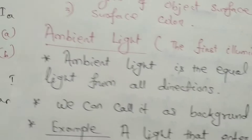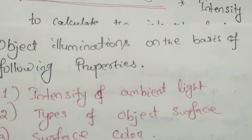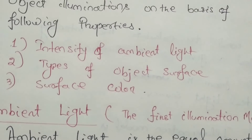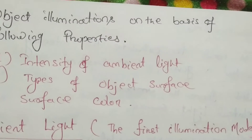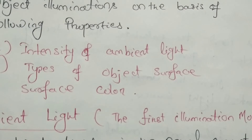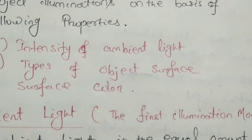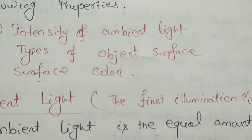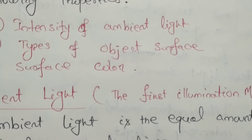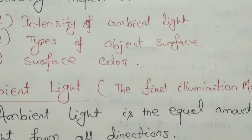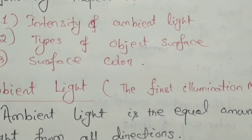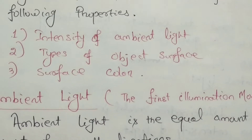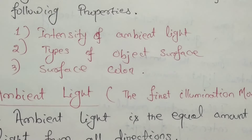Any illumination model is based on the following properties. First, intensity of ambient light. Second, types of object surface — the surface may be shiny, clay, or rough. Third, surface color — the surface color may be red, black, or whatever. On these properties the illumination model depends.